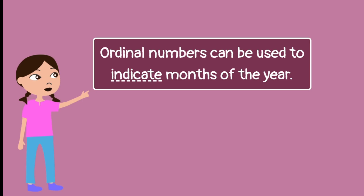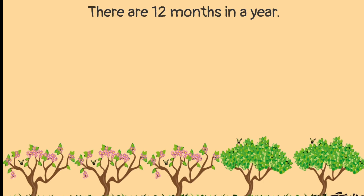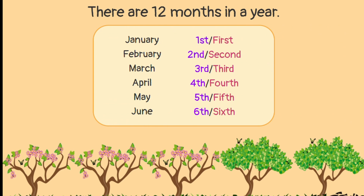Ordinal numbers can be used to indicate months of the year. There are 12 months in a year. January 1st, February 2nd, March 3rd, April 4th, May 5th, June 6th.